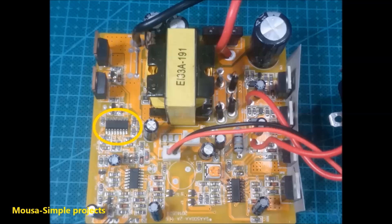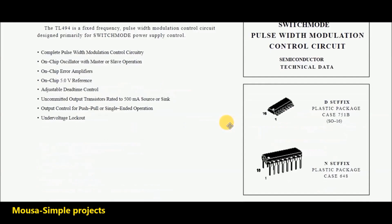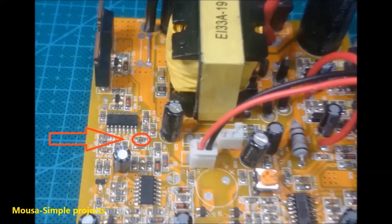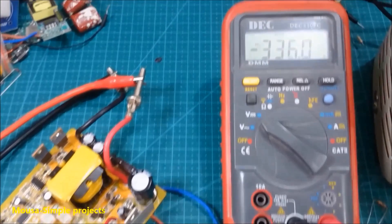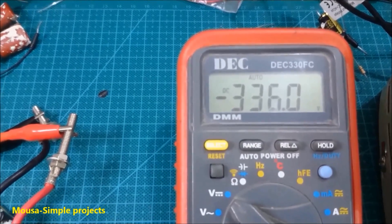According to datasheet of IC TL494, I have to replace this 15 kohm resistor to 4.7 kohm resistor. After running the circuit, as you can see, the voltage across this capacitor increased from 260 volt DC to 335 DC voltage.